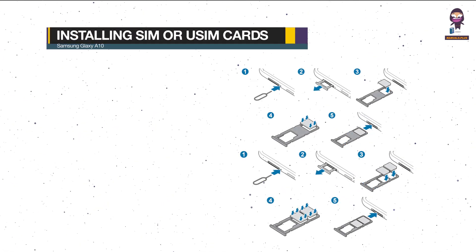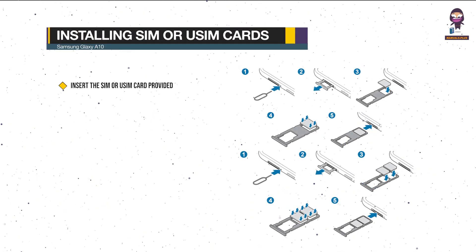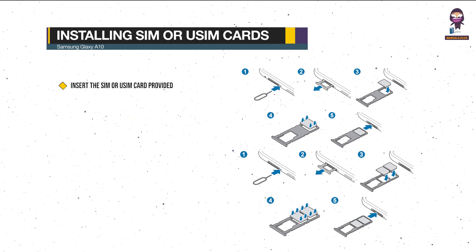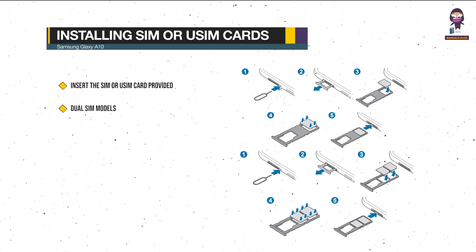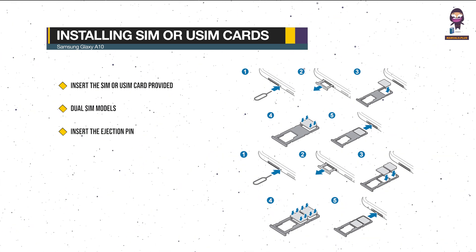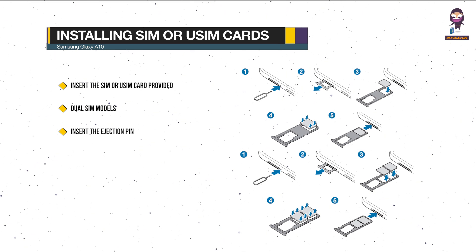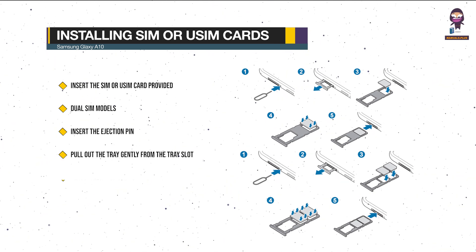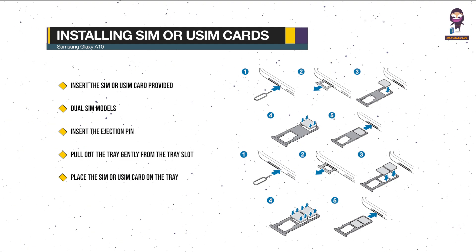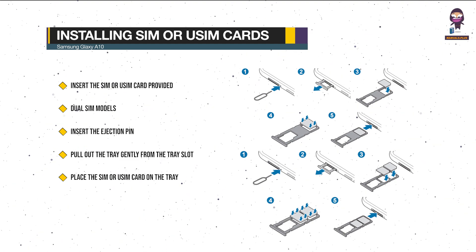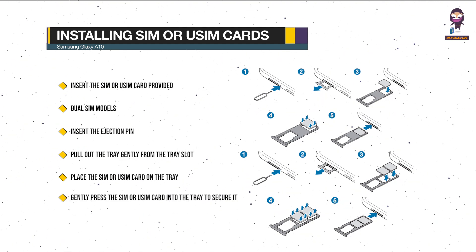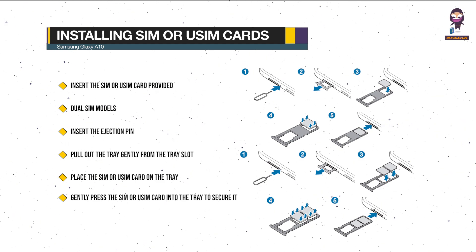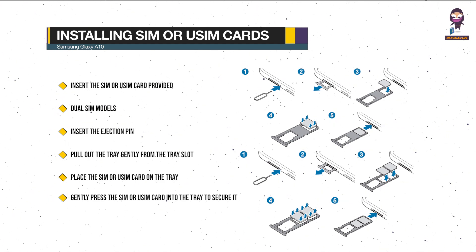Installing the SIM or USIM card: insert the SIM or USIM card provided by the mobile telephone service provider. For dual SIM models, insert the ejection pin into the hole next to the tray to loosen the tray. Pull out the tray gently from the tray slot. Place the SIM or USIM card on the tray with the gold-colored contacts facing downwards. Gently press the SIM or USIM card into the tray to secure it. Insert the tray back into the tray slot.